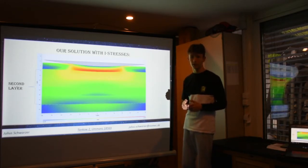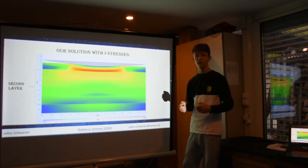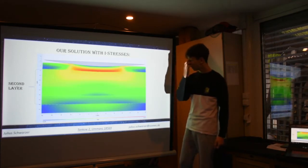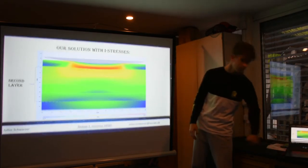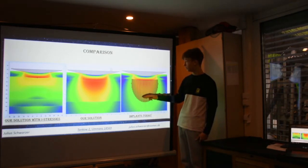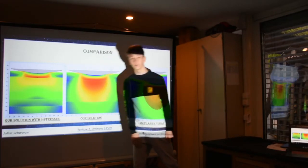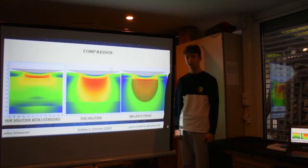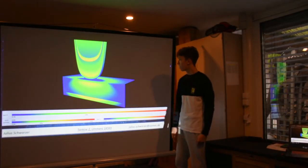Intrinsic stress fields can be created pretty easily — while you make the material, you have to put it under stress while it is being made. That is how you create intrinsic stress fields. We have done this four times within the second layer, and this created an even better, improved solution. Here is a comparison: these are today's implants with huge damage, our solution with almost no damage, and our solution with intrinsic stresses — also almost no damage, so even better.